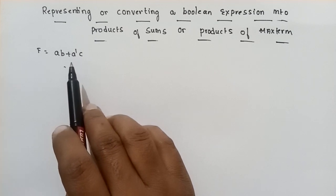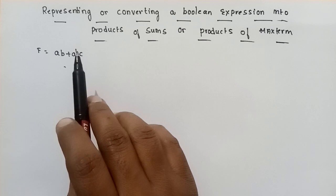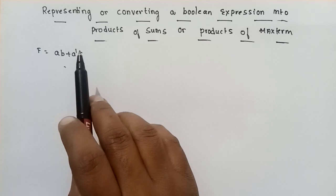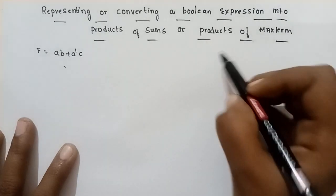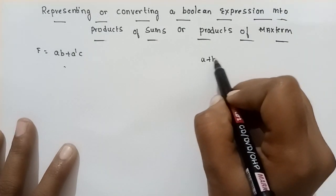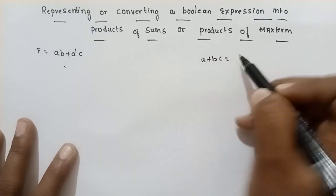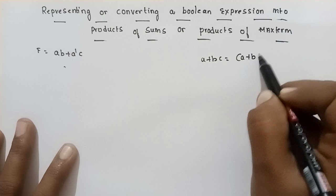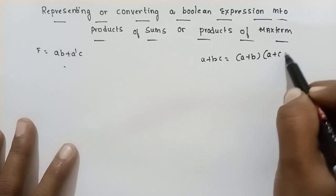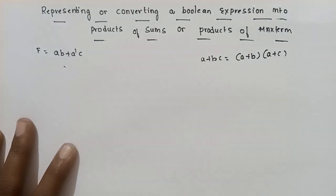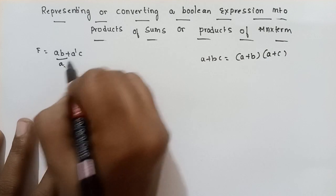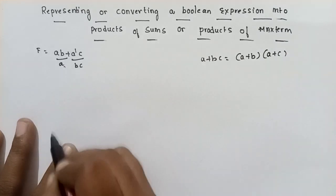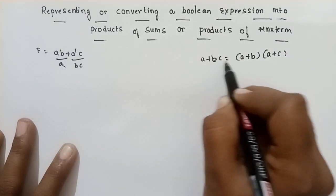In the maxterm form, we have 3 variables in each term. We will discuss the formula: A plus bc equals (A plus b) into (A plus c).